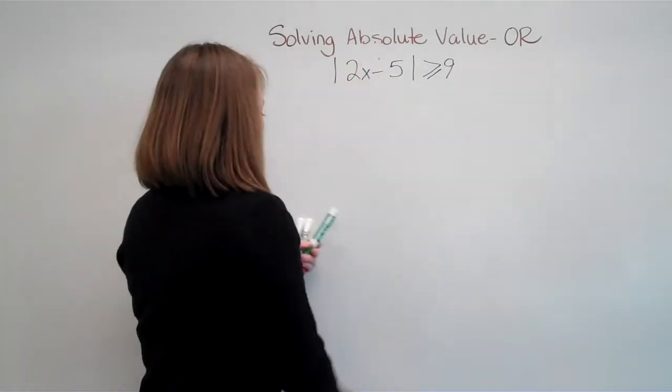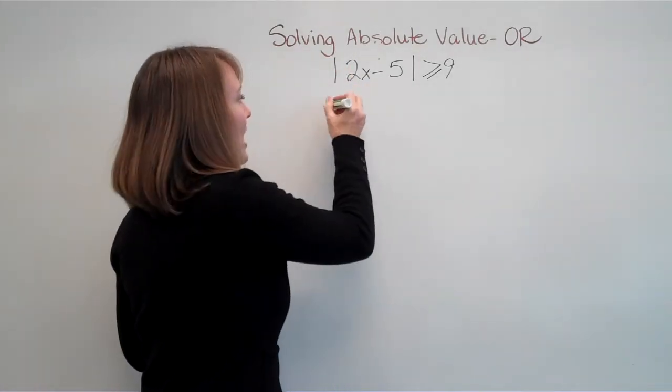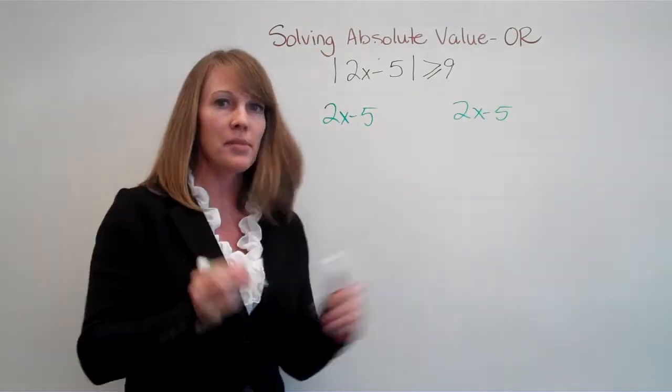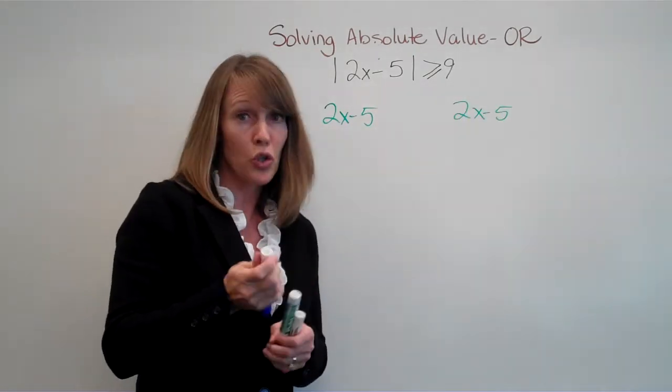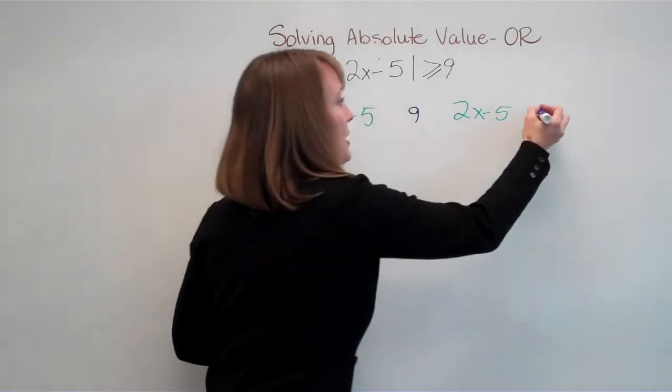All right, so just like before, absolute value Bob, we're going to take the equation out of jail and write it two times. Remember, we do not change Bob. He just comes out of jail. And then he has two choices. He can be good or he can be bad.